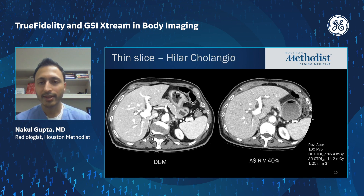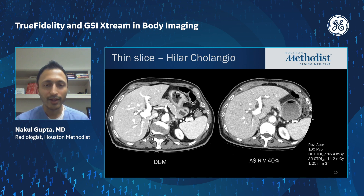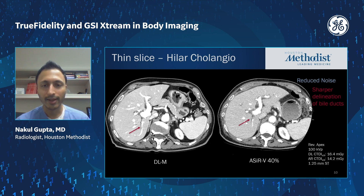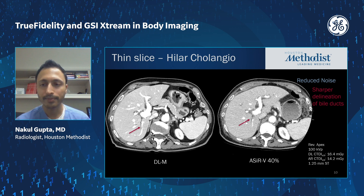Another example is a thin slice study for cholangiocarcinoma staging. A patient had a prior study with ACER-V at 40%, and the subsequent follow-up scan with deep learning has lower noise overall with a very natural noise texture, and at the same time sharper delineation of the intrahepatic bile ducts.